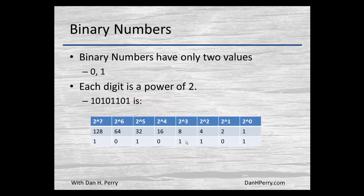In order to figure the number, wherever there is a one, that would be that two-to-that-power value. So in this case, it's two to the seventh, no two to the sixth, plus two to the fifth, nothing in the two to the fourth power of sixteen, a two to the third, a two squared, and then a two to the zero. That middle column shows the decimal equivalent. We'll see in later videos how we convert from decimal numbers to binary numbers.